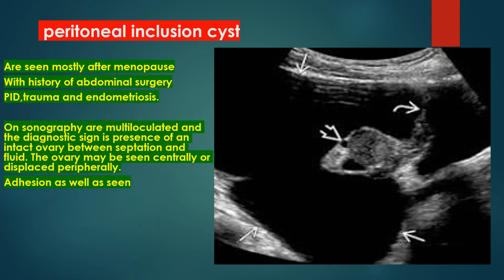Peritoneal inclusion cysts are seen mostly after menopause with a history of abdominal surgery, pelvic inflammatory disease, trauma, and endometriosis. On sonography, the diagnostic sign is the presence of an intact ovary between septations and fluid. The ovary may be seen centrally or displaced peripherally, and adhesions are also seen.